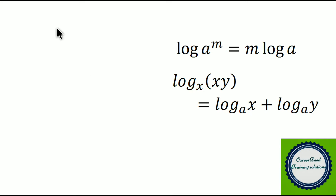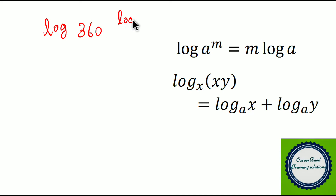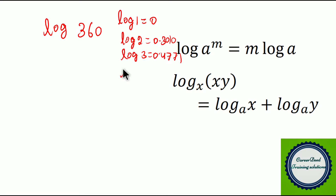Question number 4: find the value of log 360. This type of question is popular in many competitive exams. To solve it, keep certain values in mind: log 1 equals 0, log 2 equals 0.3010, log 3 equals 0.4771, and log 10 equals 1 — because log 10 to the base 10 is 1. Now we need to factorize 360.